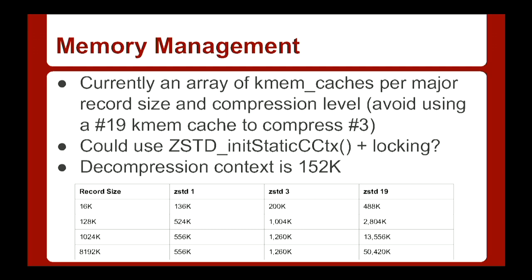The tricky part with ZStandard was memory management: depending on the compression level, the amount of memory you need changes. With 19 levels, I really didn't want to create 19 different-sized KMEM caches. So I basically did low, medium, and high — you'll have a little bit of waste, but in general you're only going to have one context per core, so there won't be excessive waste. Originally I did an array with one for each compression level, but it got out of hand quickly — you also have to consider the record size, multiplying 19 compression levels by multiple record sizes.